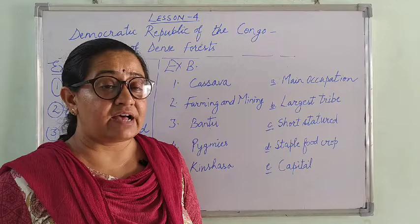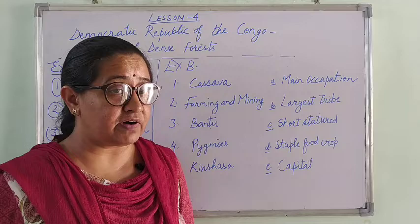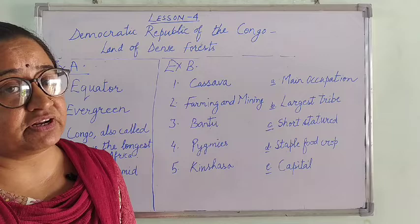Then we studied about its vegetation. This land is covered with thick forest. Many hardwood trees are also found here, like Mahogany and Ebony, which provide the raw material for industries.